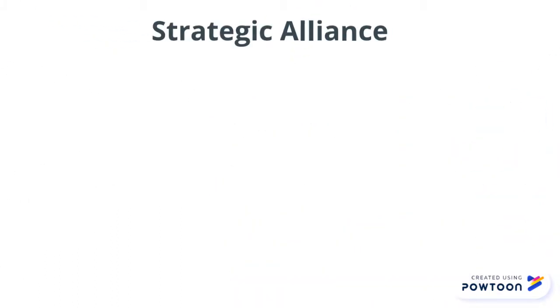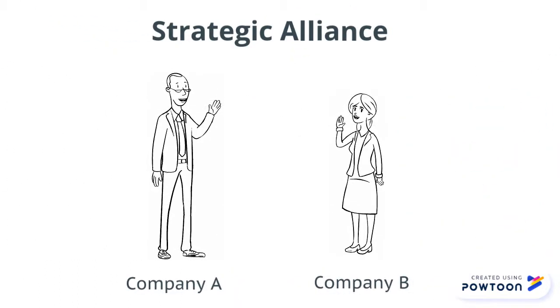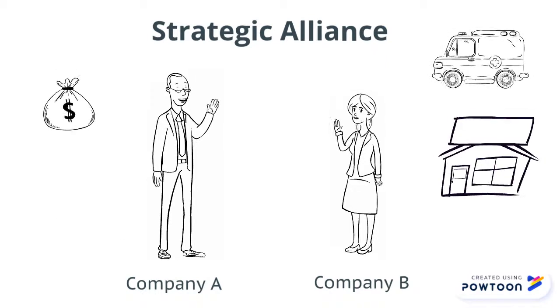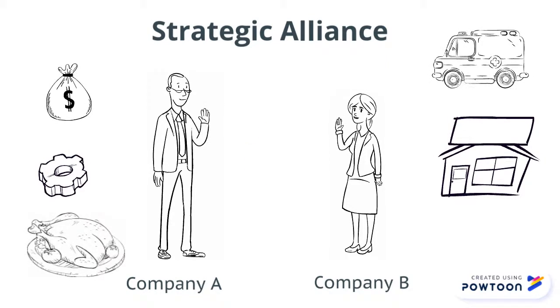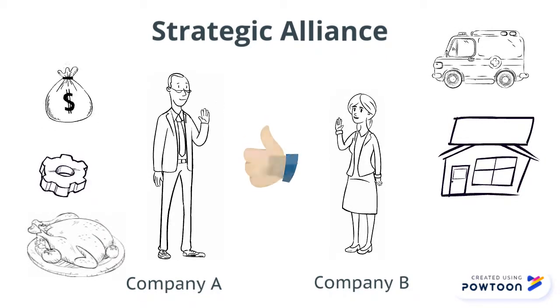In a Strategic Alliance, Company A and Company B will contribute necessary resources like transportation, capital, property, skills, etc., so that the alliance can work out and both parties can benefit.